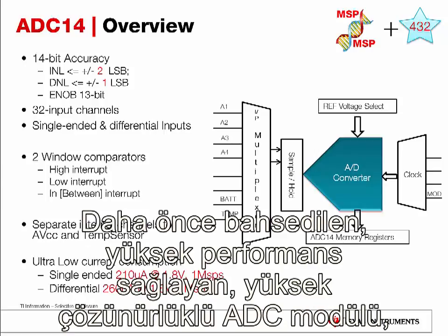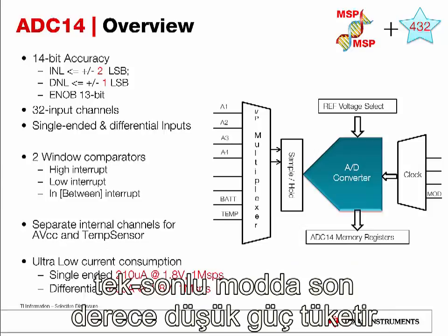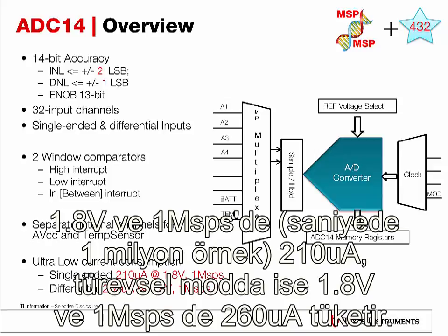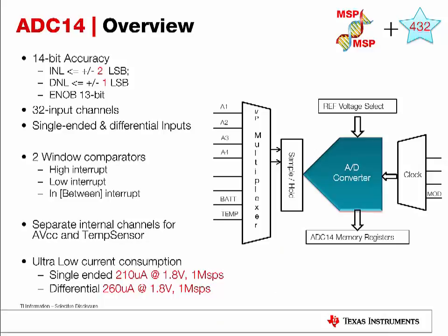While providing high performance and high resolution, this module also achieves extremely low power consumption, with single-ended mode consuming 210 µA at 1.8V at 1 mega sample per second, while differential mode consumes only 260 µA at 1.8V at 1 mega sample per second.